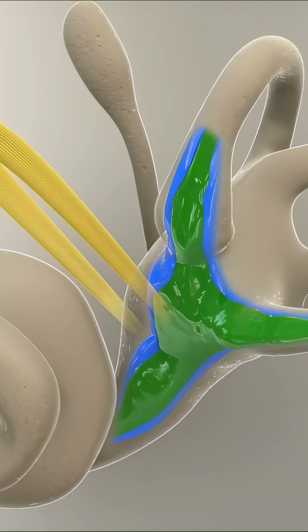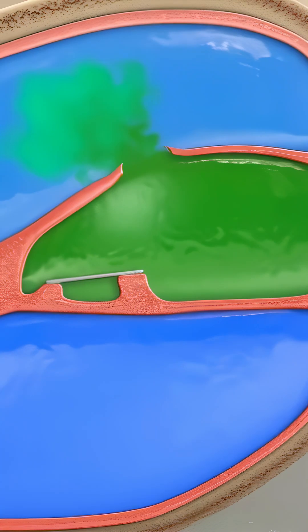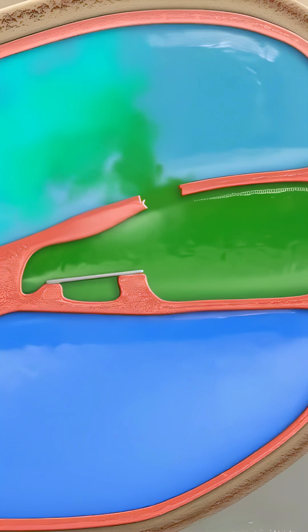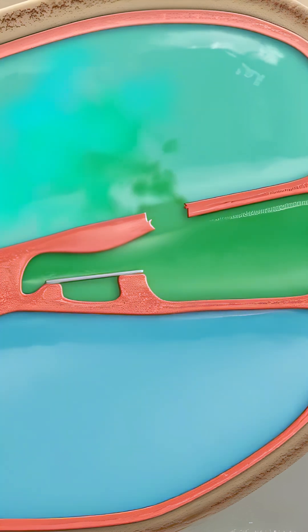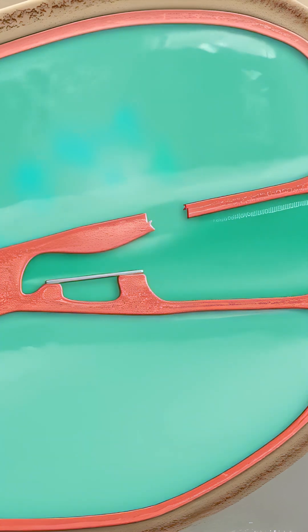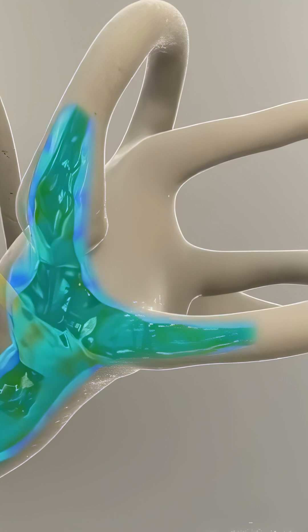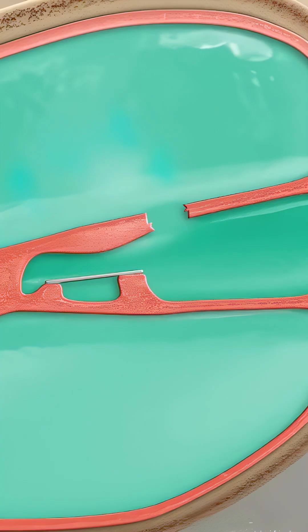The first symptoms often include fullness and ringing in the ear. When the endolymphatic sac becomes too full, the vestibular membrane may rupture, causing inner ear fluids to mix. This leads to a sudden episode of vertigo.